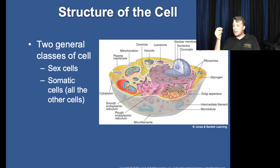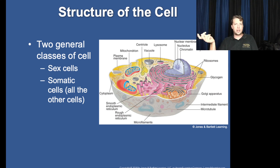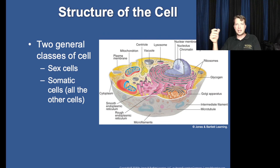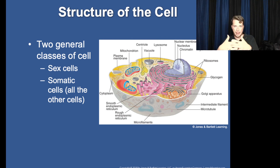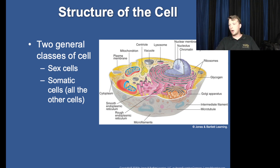Intermediate filaments and microfilaments — we'll see those more when we look at muscle cells. Though they can be present in all cells, they are in much greater quantity in muscle cells. That's your actin and myosin fibrils — that's what makes muscle cells contract.